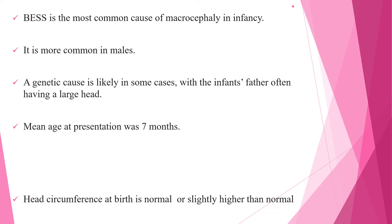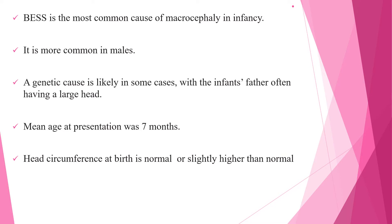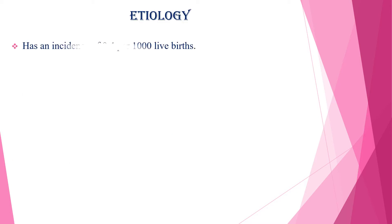The mean age at presentation was seven months, and head circumference at birth is usually normal or slightly higher than normal. Benign enlargement of subarachnoid space has an incidence of 0.4 per 1000 live births.